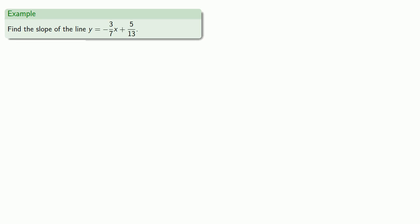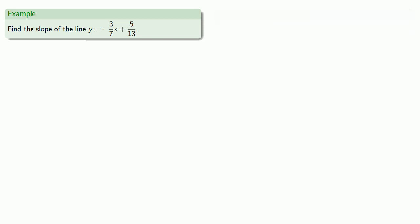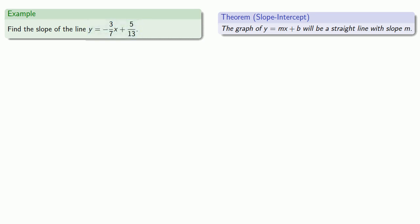For example, suppose we want to find the slope of the line y = −(3/7)x + 5/13. We do have our theorem, but if we forget it, it's not a big deal — we can find the slope by finding two points on the line. The theorem just saves us a little time. But we should read the fine print: this only works if the equation is in the form y = mx + b. Our equation y = −(3/7)x + 5/13 is in that form, so the theorem tells us the slope is the coefficient of x, which is −3/7.